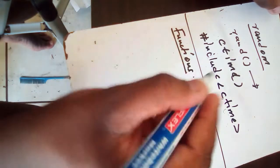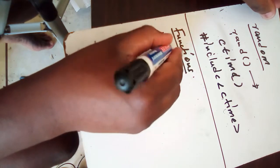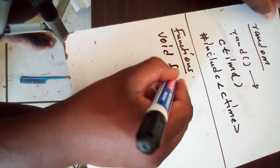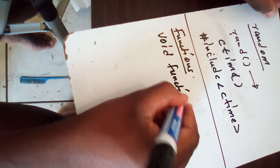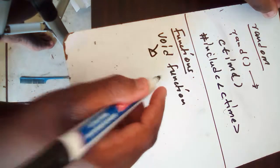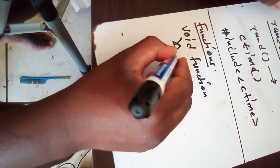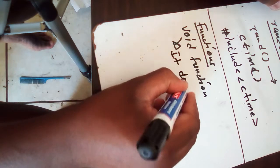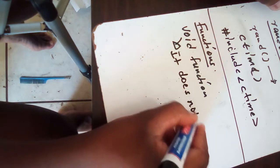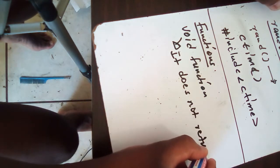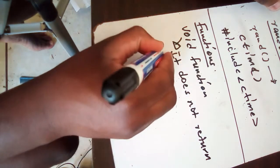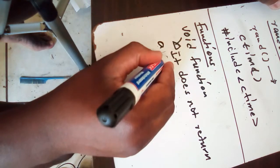When we're talking about functions, we have a function called void function. Void function is a function that does not return a value. It does not return a value.